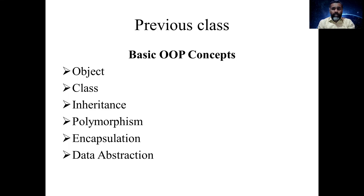We saw the relationship between object and class using a dog example — creating a class for a dog, identifying common characteristics and functions, that is, methods and behaviors. For different breeds we can create objects of that dog class. That was the example from the previous class, along with inheritance.